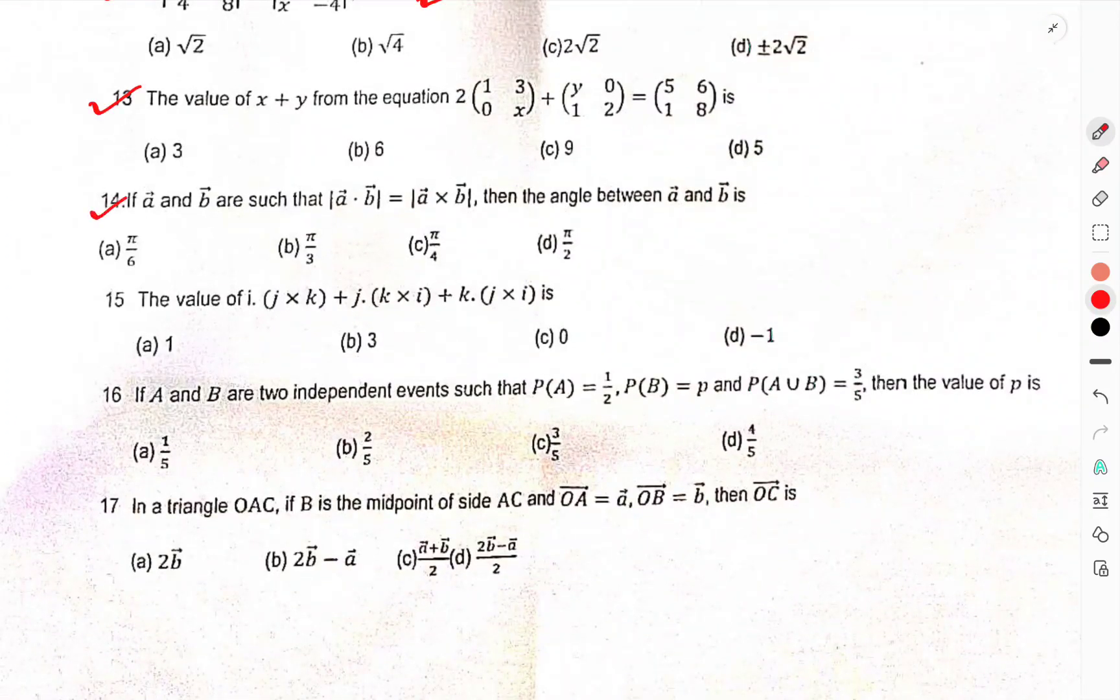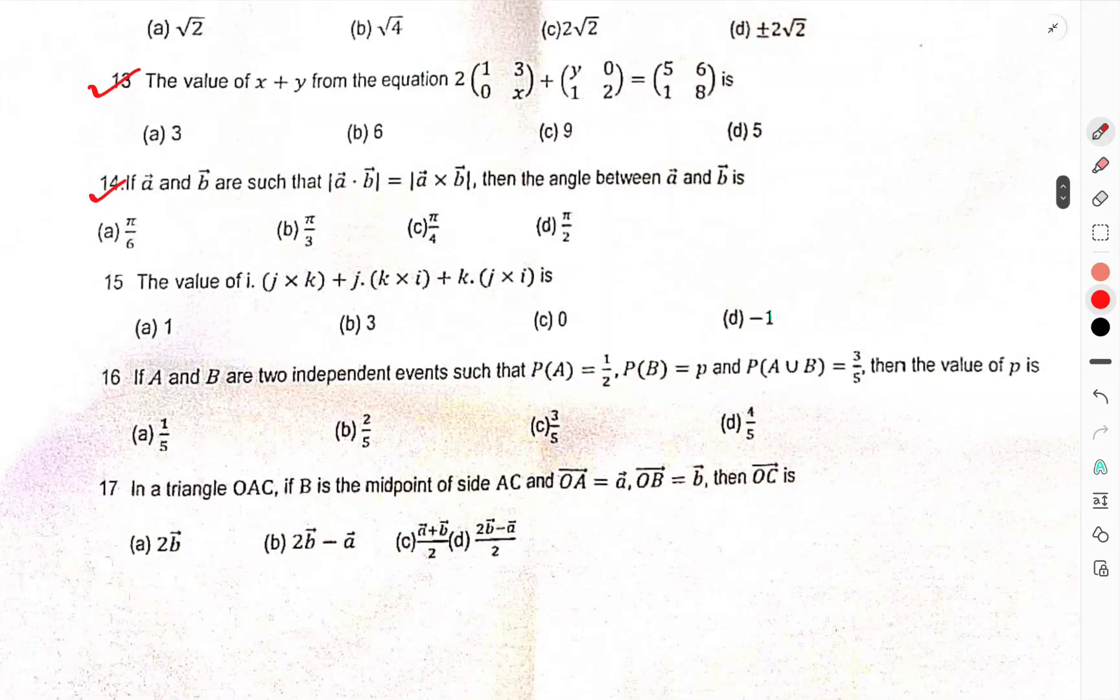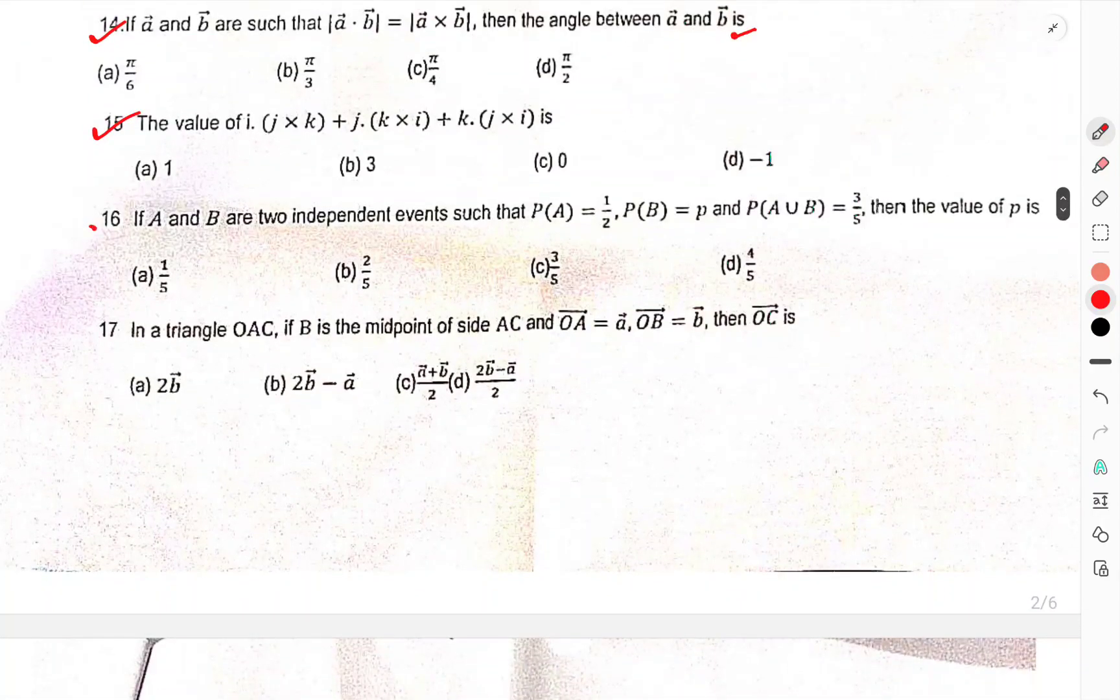Question number 13, the value of XY in this is. Question number 14, A and B vector us is that it would be is A cross B, then the angle between A and B is. The value of this is. Question number 16, A and B are two independent events, P A is equal to 1 by 2, P is equal to P, P union B as 3 by 5, then the value of P is.